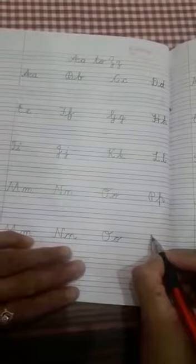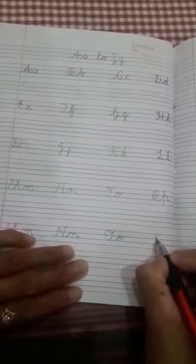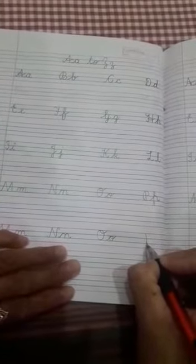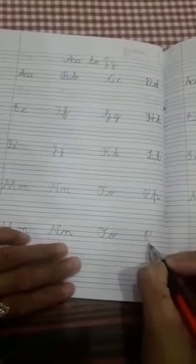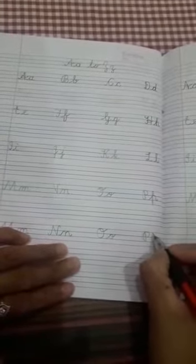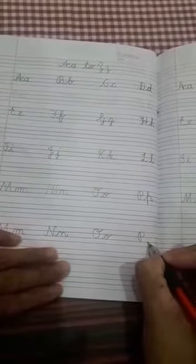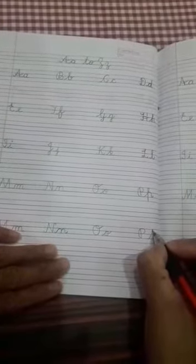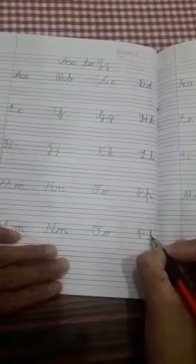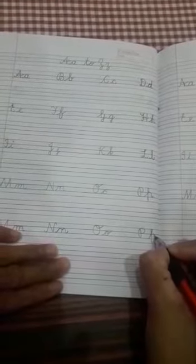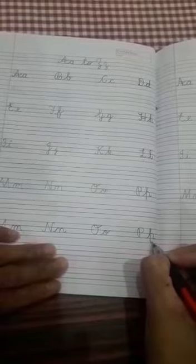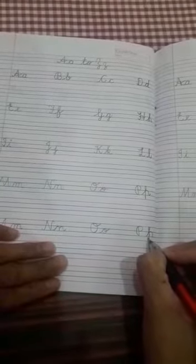Now P. Put the pencil on top line, come down, turn and make a half circle. Capital P. Now small P. Put the pencil on third line, touch to top line, come down, touch to bottom line and make a turn. This is a small P. P for parrot.